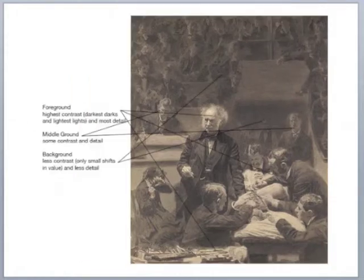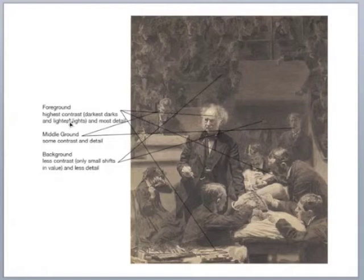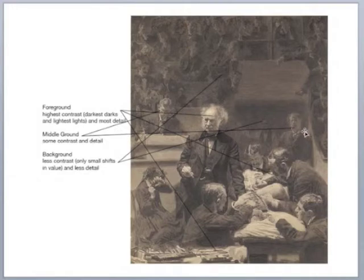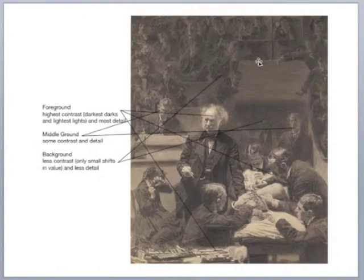The next slide shows that in a diagram. Dark is dark, light is light, most detail in the foreground figure and implements. In the middle ground — looks like there's a stenographer and another person — these two figures show less detail and less contrast than the foreground, but still more so than the background, which has very small shifts in value.